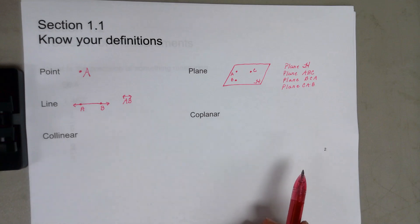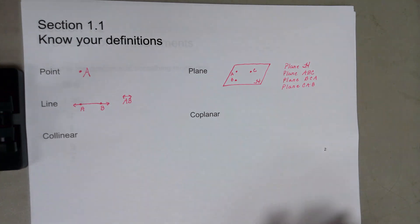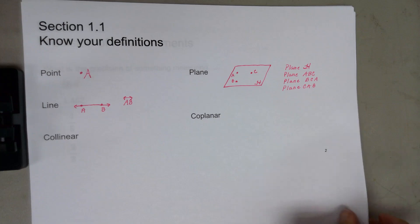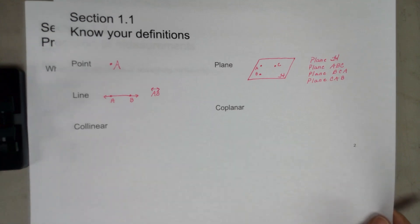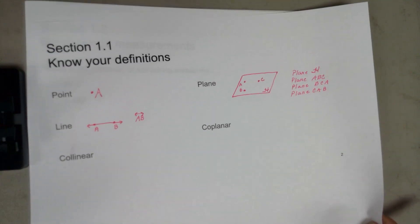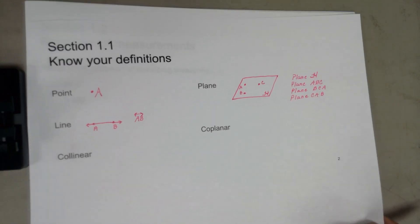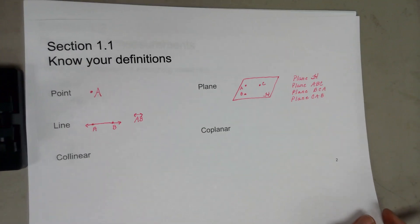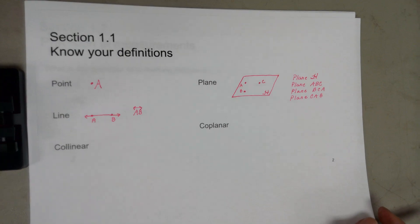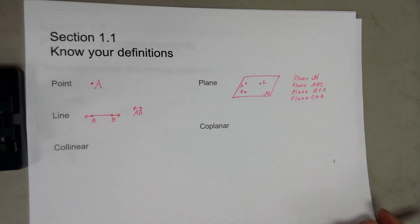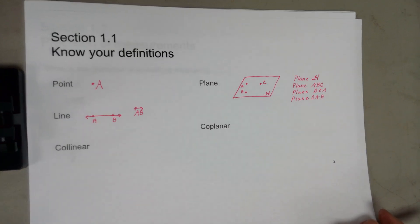Coplanar means it lies on the same plane. Make sure you know those definitions and be able to apply them in problems. So if you read that something is collinear in a problem, you would know that those points lie on the same line.